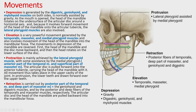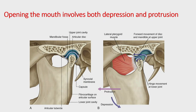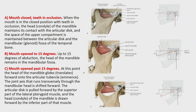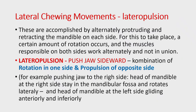In summary: rotational movement (depression and elevation) occurs in the lower joint cavity, while translational movement (protraction and retraction) occurs in the upper joint cavity. The lateral pterygoid muscle plays a critical role in initiating depression and in protraction — its superior head attaches to the capsule and articular disc, and its inferior head attaches to the pterygoid fovea on the neck of the mandible.